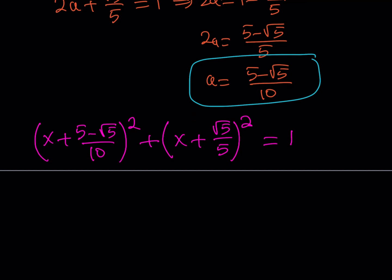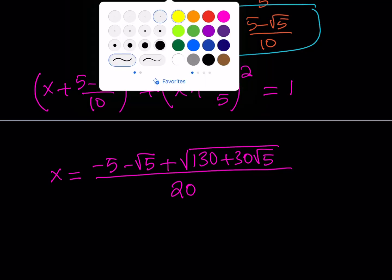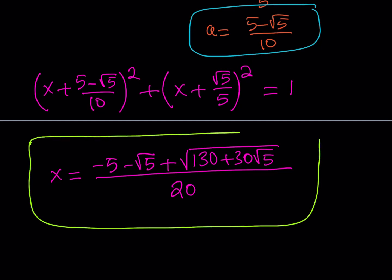We can expand this, we can arrange the terms. We're going to get 2x squared plus blah blah blah. There's going to be a lot of constants, a lot of radicals. I'm going to spare you all that trouble and give you the x value. We're getting two values, one of which is negative and that's not acceptable because x is the side length of the square. So x from this equation is going to be negative 5 minus square root of 5 plus the square root of 130 plus 30 root 5, all over 20. That's going to be my x value for this equation. That's the side length for the square. Thank you for watching and I'll see you in the next video. Until then, be safe and take care. Bye-bye.